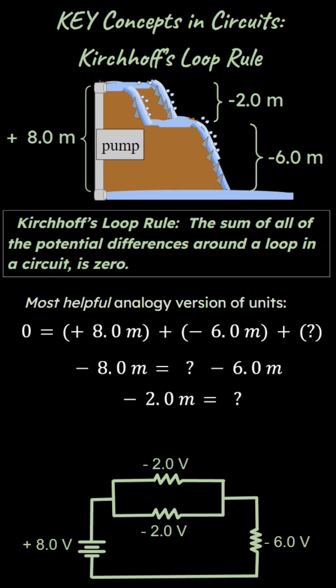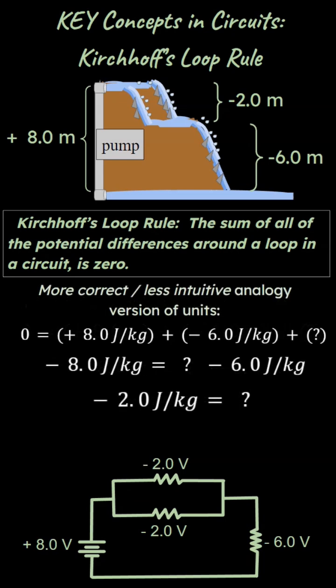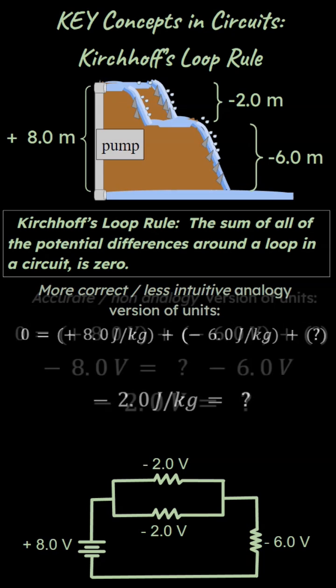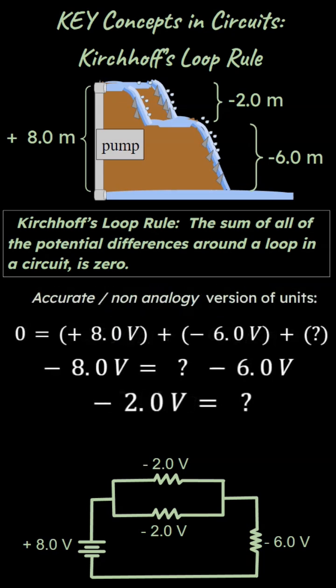You only count these once if they are in parallel with each other. So if you want to use other units that are less intuitive but are more correct, think of it as joules per kilogram, using Kirchhoff's loop rule just use this.